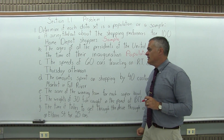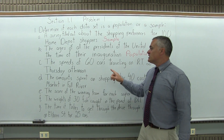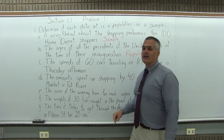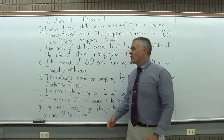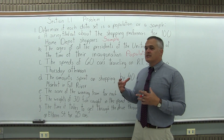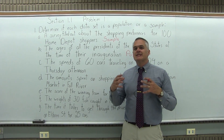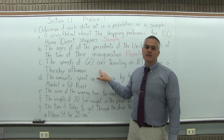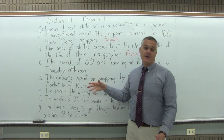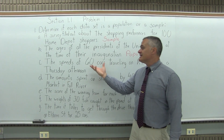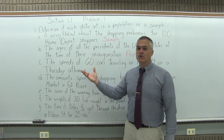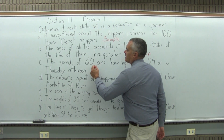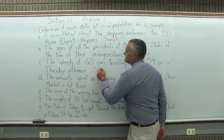The next data set, part C: the speeds of 60 cars traveling on Route 24 on a Thursday afternoon. What's the entire group they want to study? It's likely all the cars that travel on Route 24 to see how fast they're going. Those particular 60 on one afternoon would only be part of the group, and being only part of the group makes that a sample.